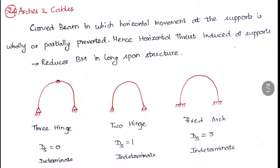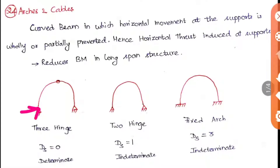This horizontal thrust is the main factor in arches — it is just a horizontal reaction. The purpose of arches is that when the span is more, you can construct an arch rather than a straight beam. If you construct a beam over that span, the bending moment taken by the beam will be more, whereas the bending moment taken by the arch will be less.